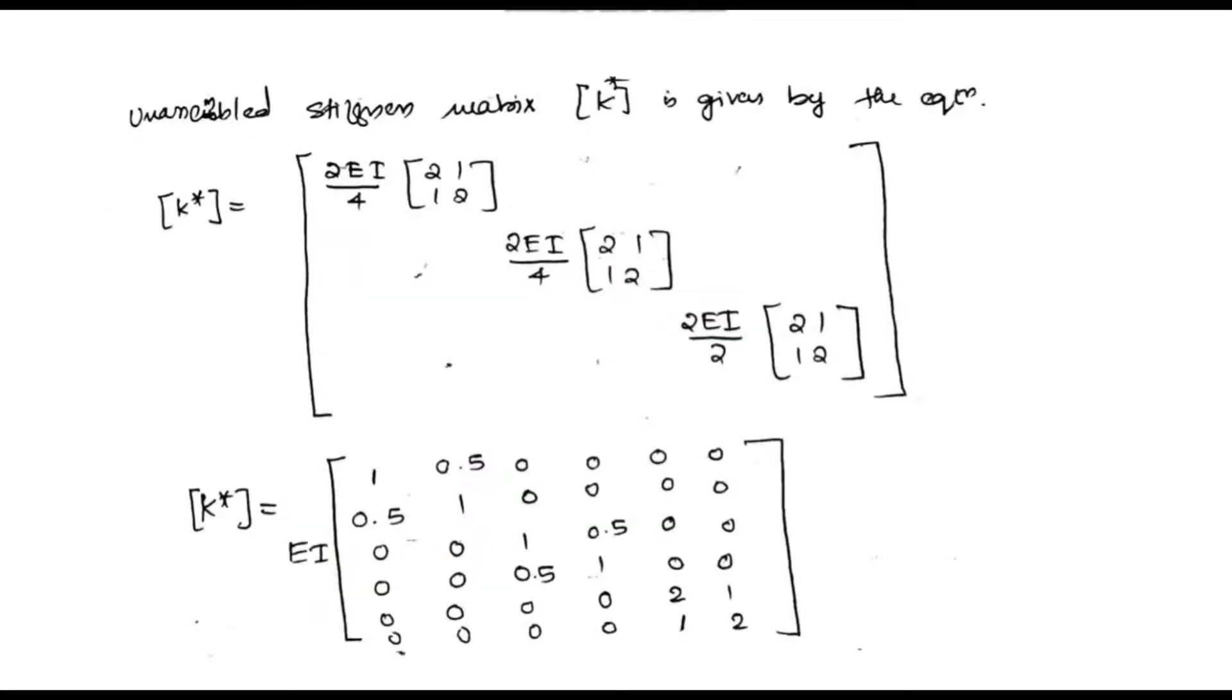Now we have to develop the unassembled stiffness matrix, i.e. matrix K star. Before that we have to develop the stiffness matrix of each members with reference to their respective element coordinates. We have discussed earlier how to develop the stiffness matrix